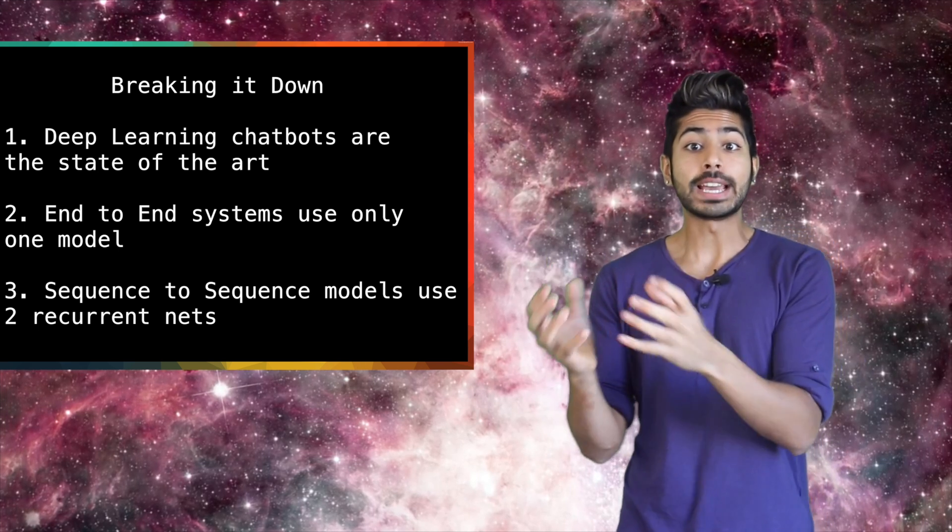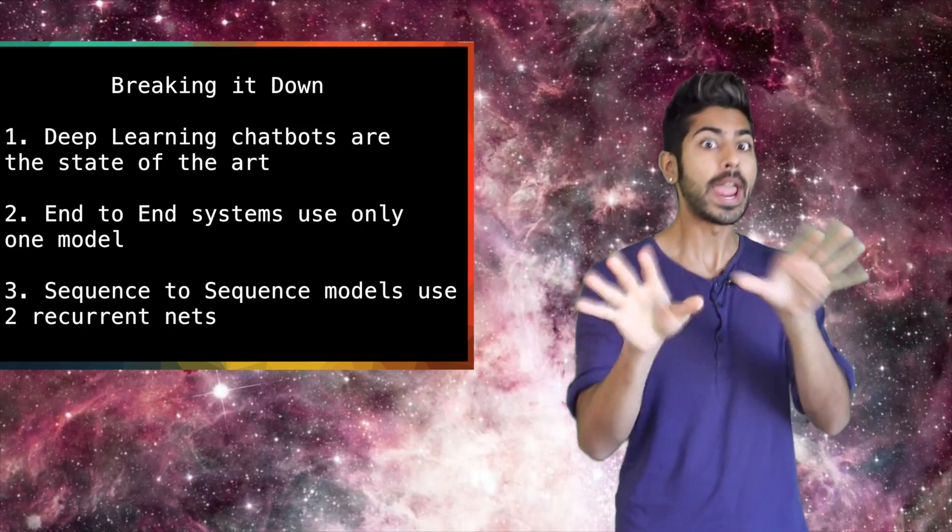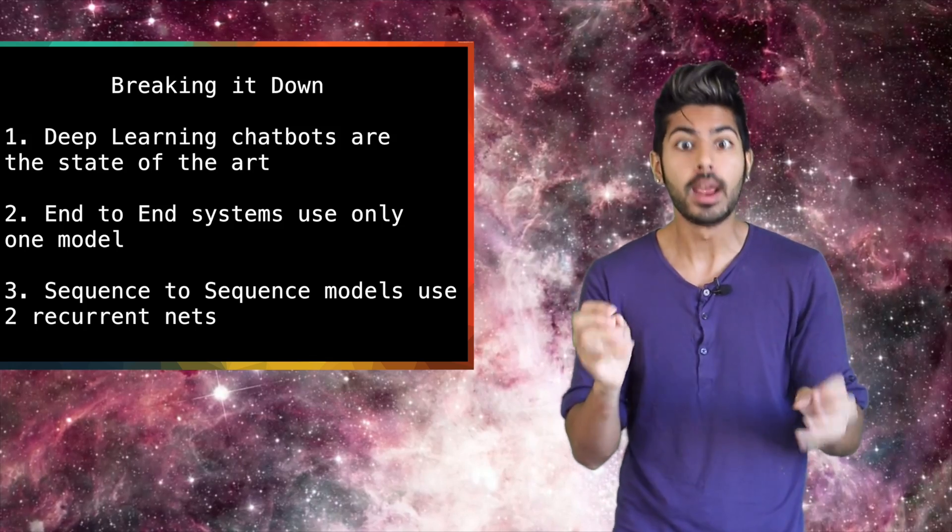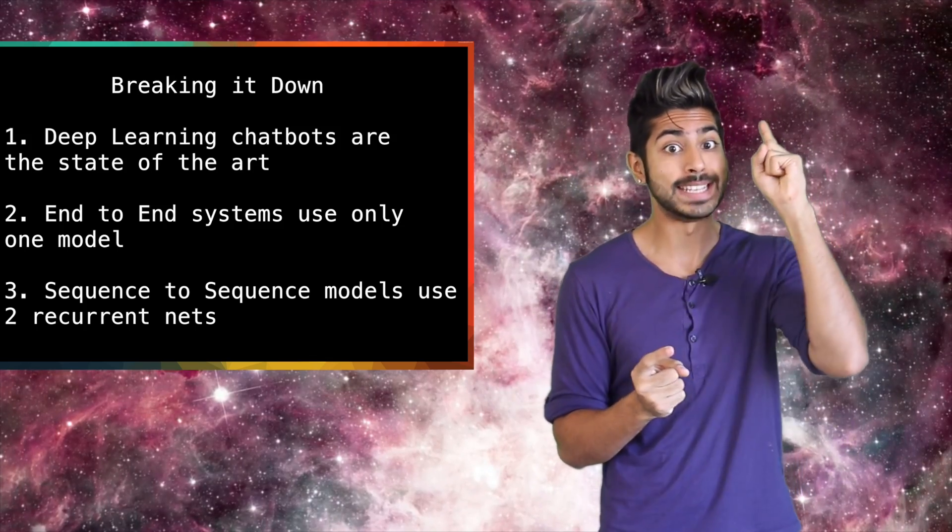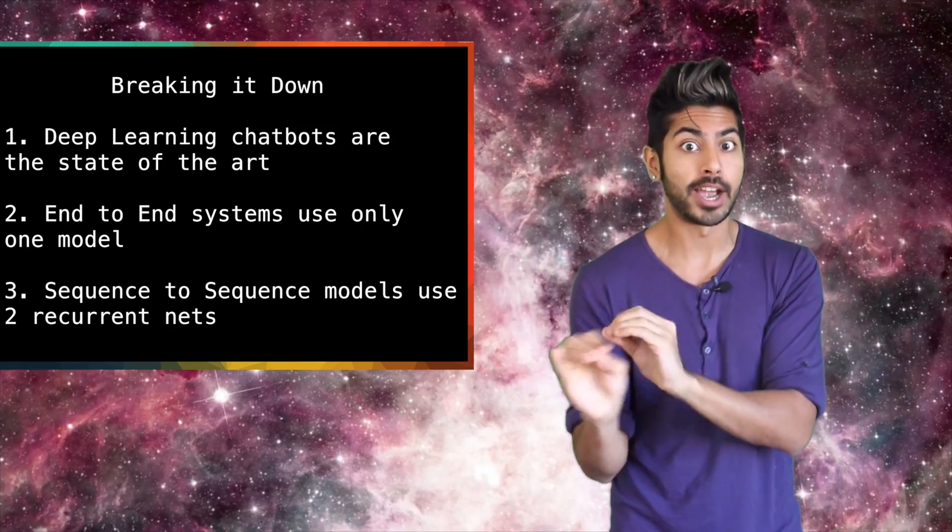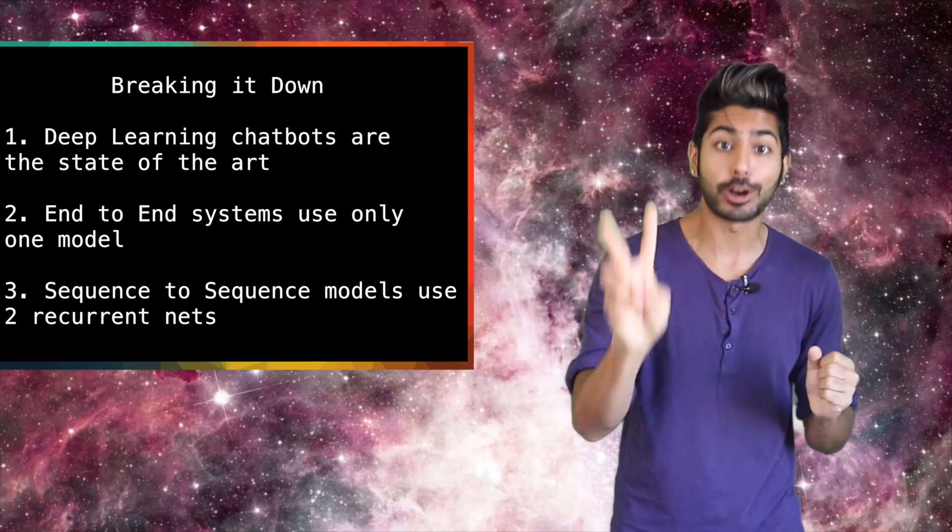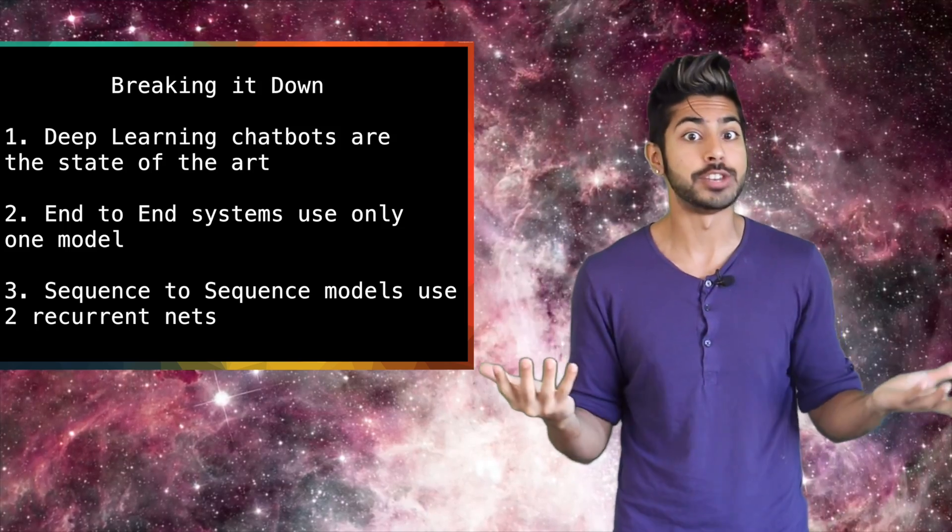So to break it down deep learning allows us to make chatbots that are way more human-like than any kind of handcrafted chatbot we've made before. End-to-end systems are systems that allow us to use a single model to give us our desired outcome and we can use sequence to sequence models using two recurrent neural nets to create conversational chatbots.